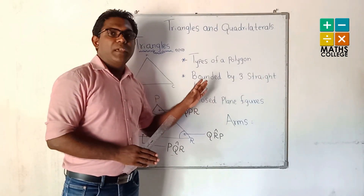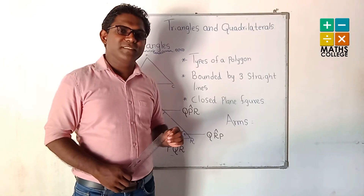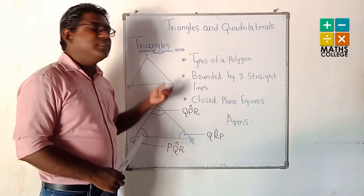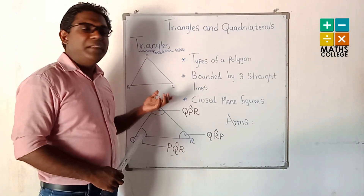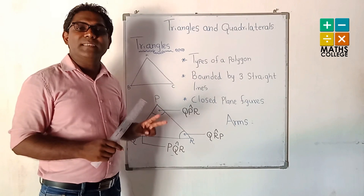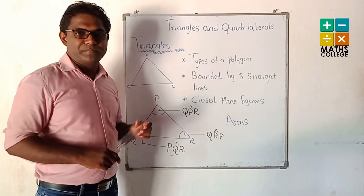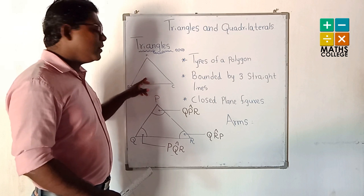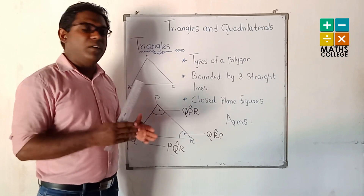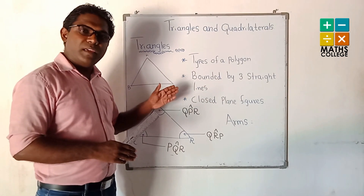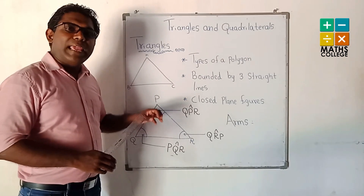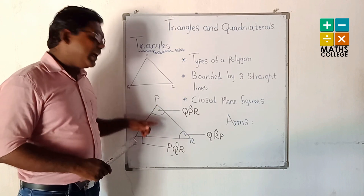How does this plane figure get the name 'triangle'? If we separate the word into two parts: 'tri' means three. This figure has three angles, so we call this figure a triangle. Now we are going to identify the elements of a triangle.